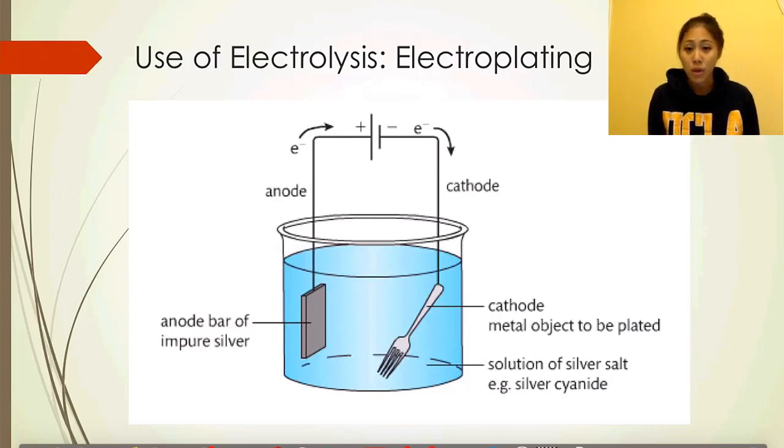The anode is a bar of impure silver. Remember we looked at copper earlier, impure copper, purifying copper at the cathode. It's kind of similar to that. The same theory behind it to develop electroplating. In electroplating, the electrons move from the anode to the cathode. You just have to remember that the anode typically is an impure version of whatever you want your object to be electroplated with, and the solution must be the solution of its ions, so silver salt in this case.